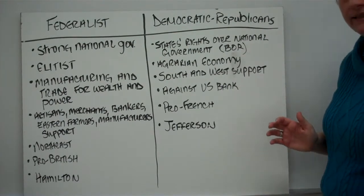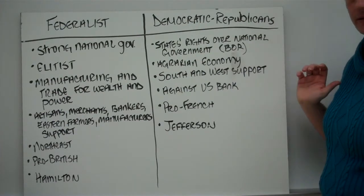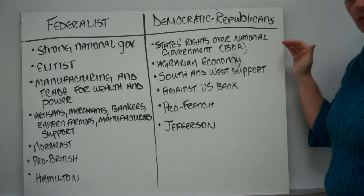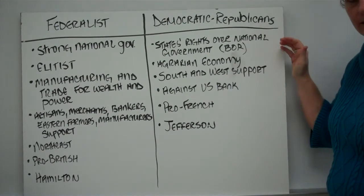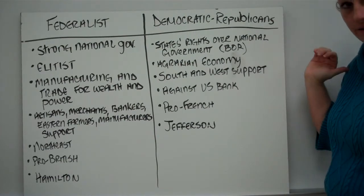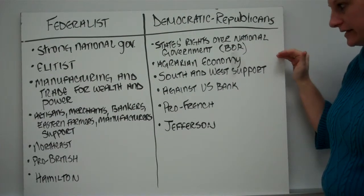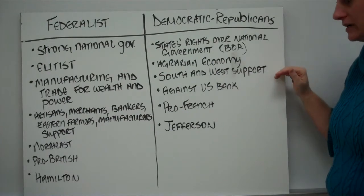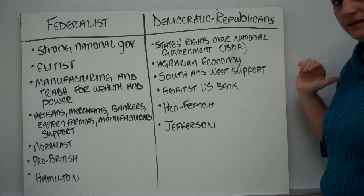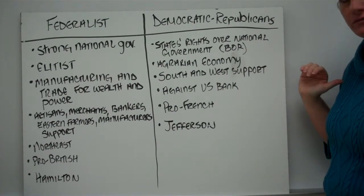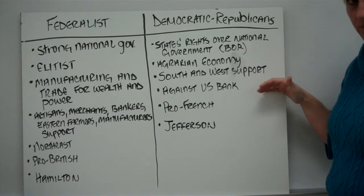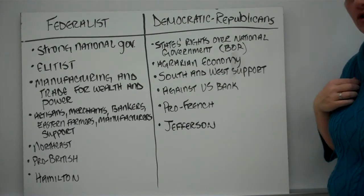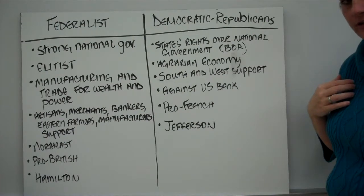The opposite side, ideologically speaking, were the Democratic-Republicans. They believed in state rights over national government. The Democratic-Republicans were the ones who pushed for the Bill of Rights because they were worried that individual rights would be lost in the Constitution. They supported an agrarian economy — agriculture over industry. Their supporters were found primarily in the South and the West, where larger farms and plantations existed. They were against the United States Bank, very pro-French, and were led by Thomas Jefferson. Jefferson and Hamilton would clash repeatedly.